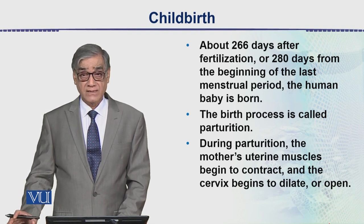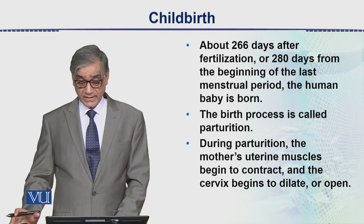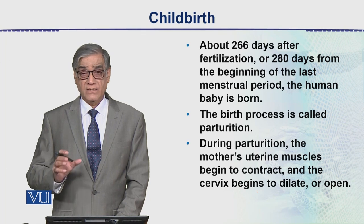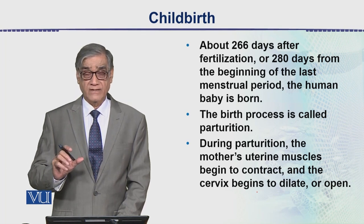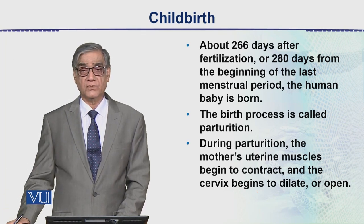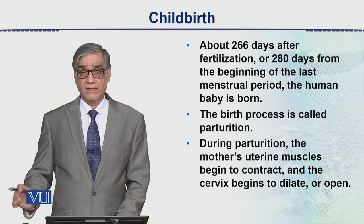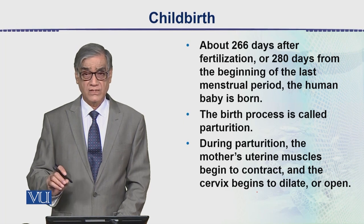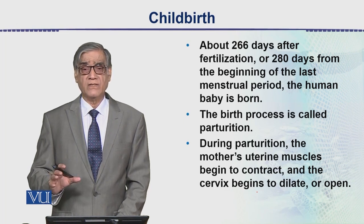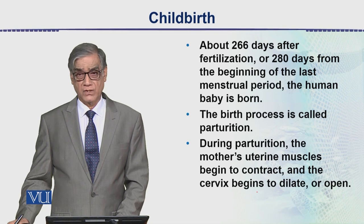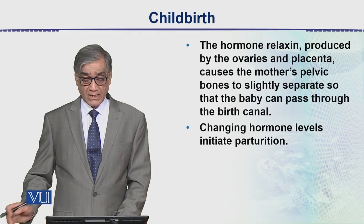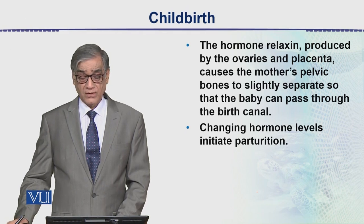During parturition, the mother's uterine muscles begin to contract, and the cervix begins to dilate or open. The cervix is essentially the gate of the uterus. The hormone relaxin, produced by the ovaries, also plays a role at this stage.